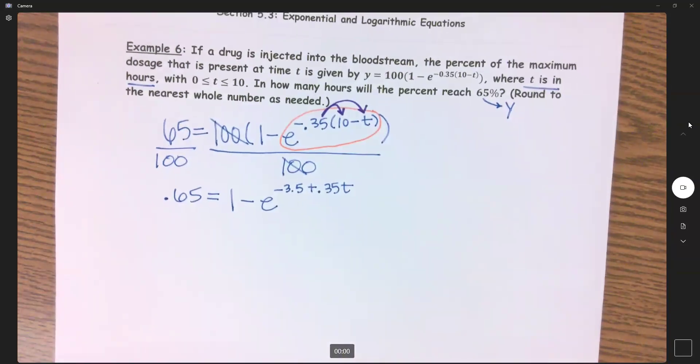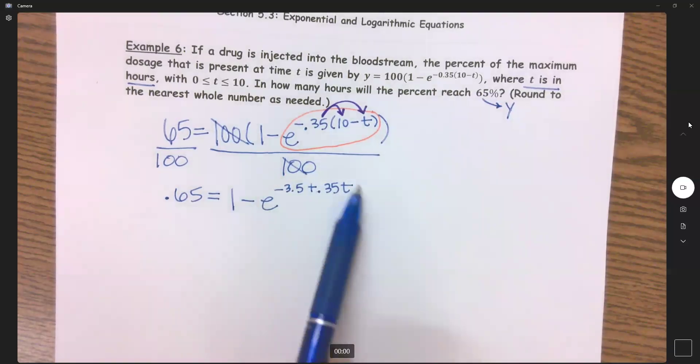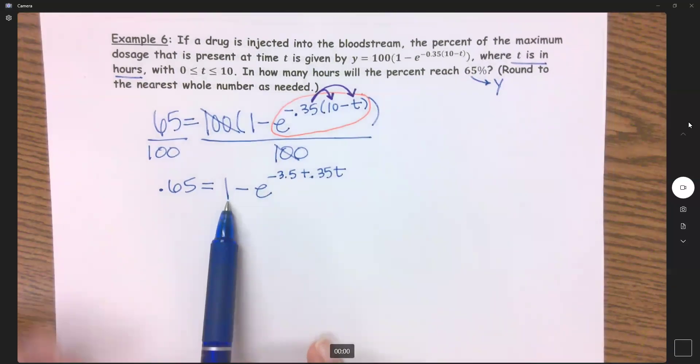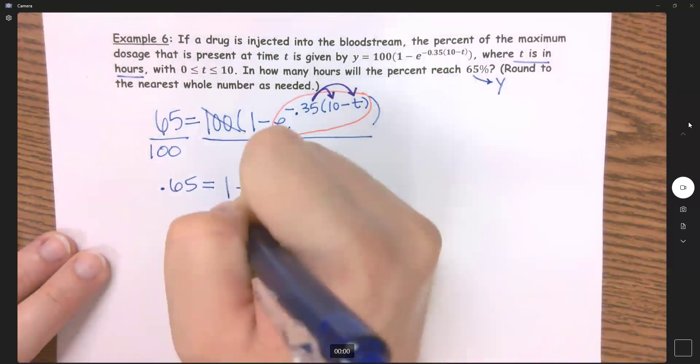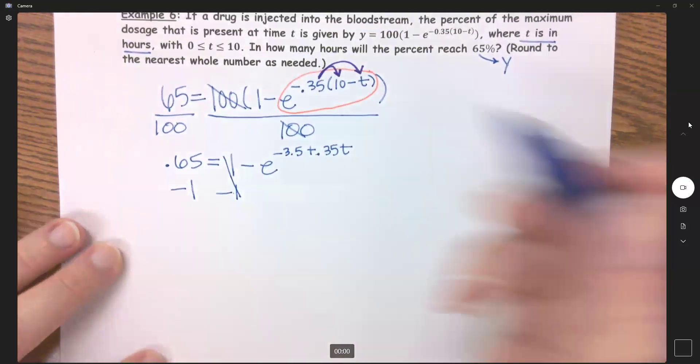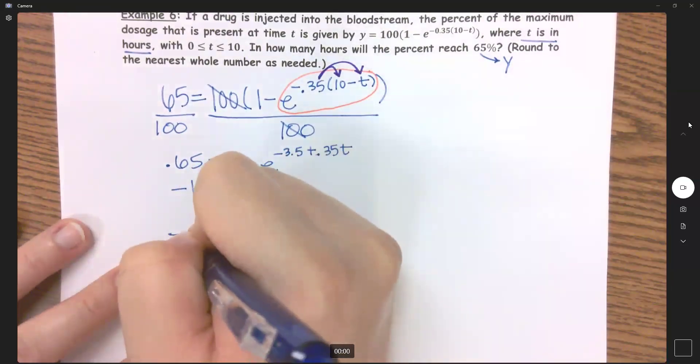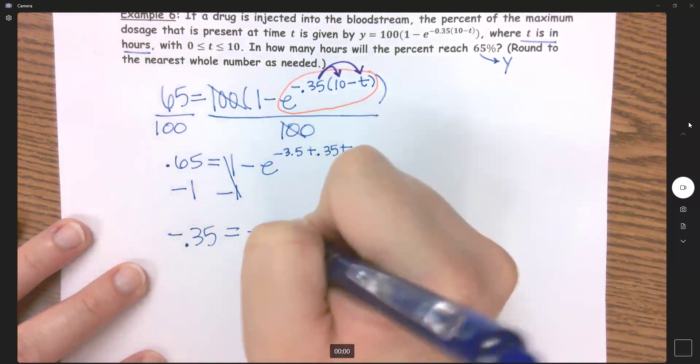I'm still on step one, I'm still needing to isolate. I still haven't isolated this exponential here, so next what I need to do is subtract this one over. Those will cancel, and that's going to give me negative 0.35 equals negative e^(-3.5 + 0.35t).